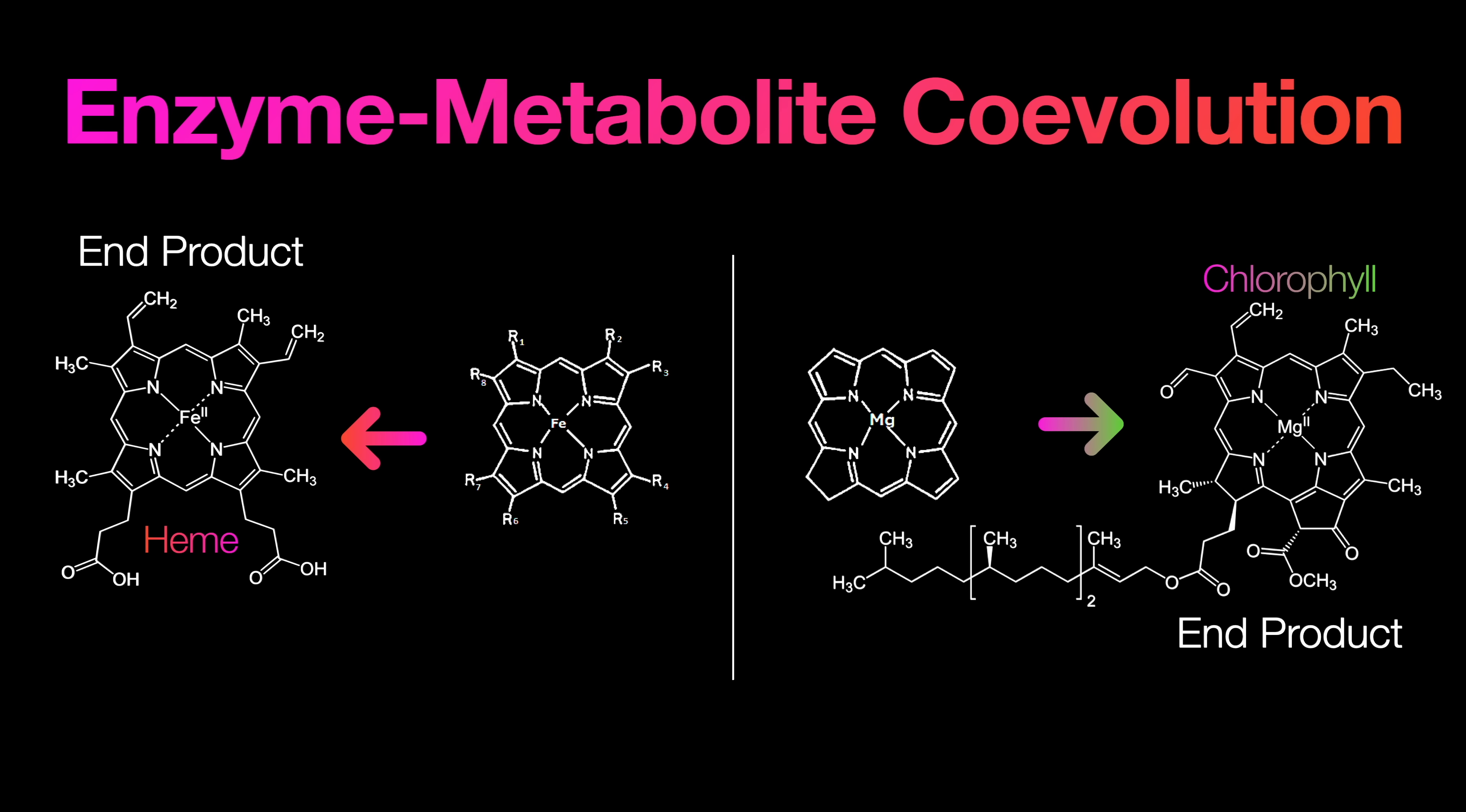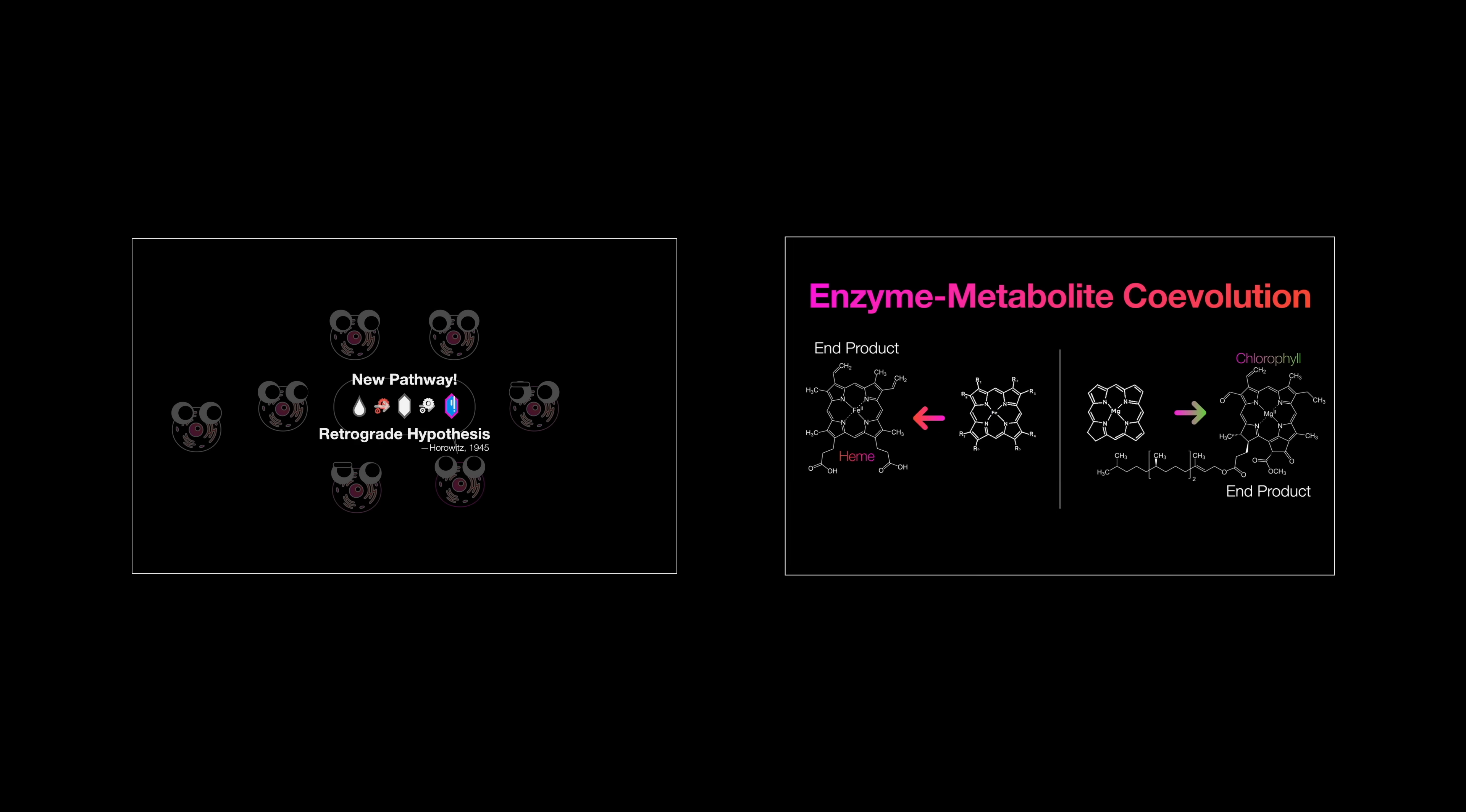doesn't hinge on this, but in the fact that the chemicals themselves, the metabolites, evolve along with the enzymes. So did pathways build themselves backwards like the first hypothesis, or did they optimize forwards step by step like the second? They sound equally intuitive, don't they?